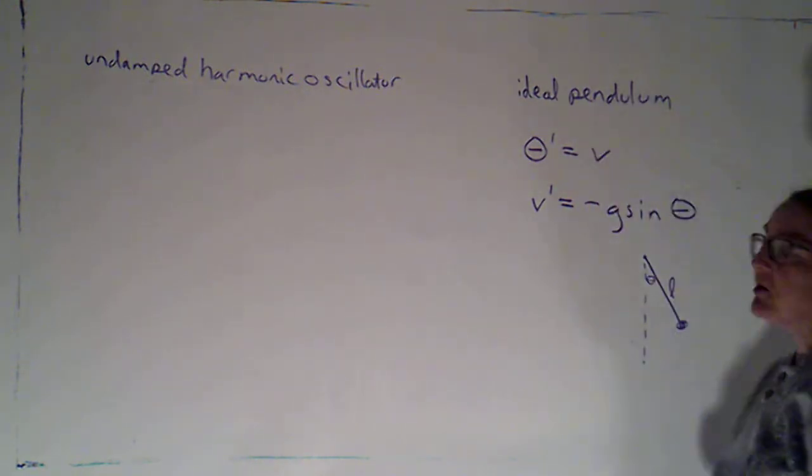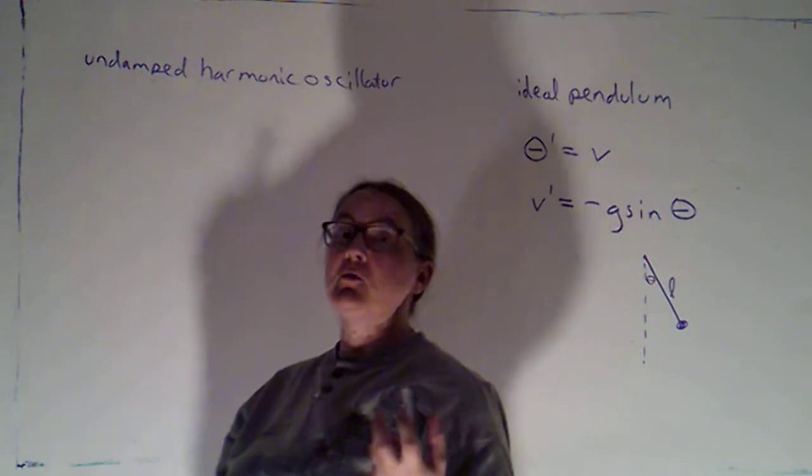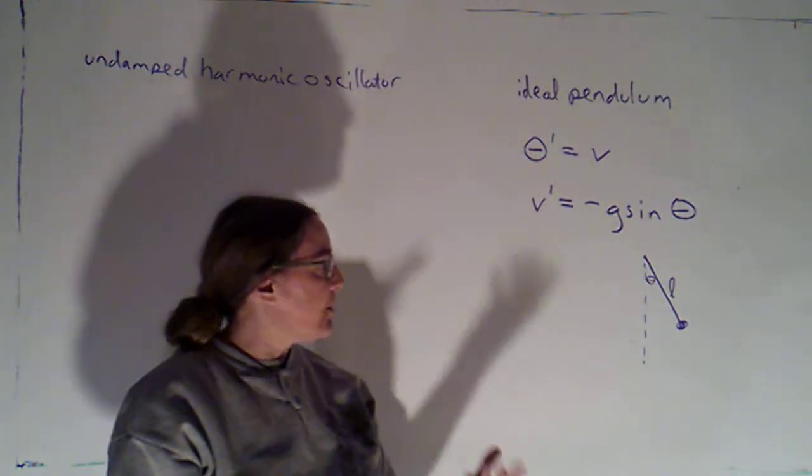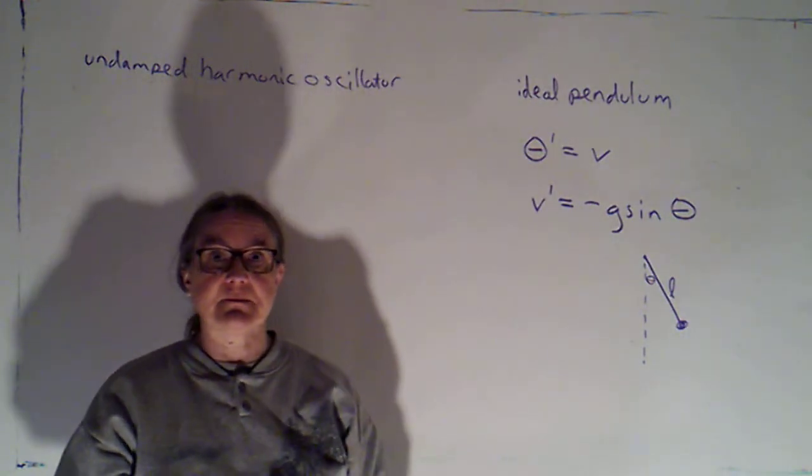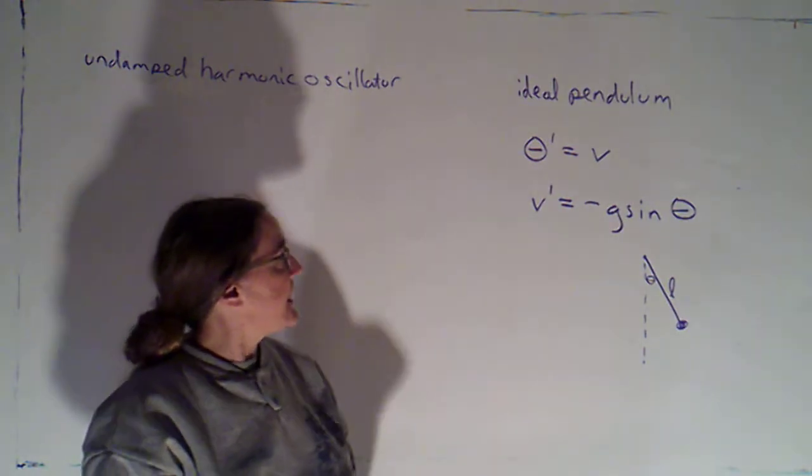This is called an ideal pendulum because it's the pendulum we would get if there are no damping forces. So if there's no friction, no air resistance.